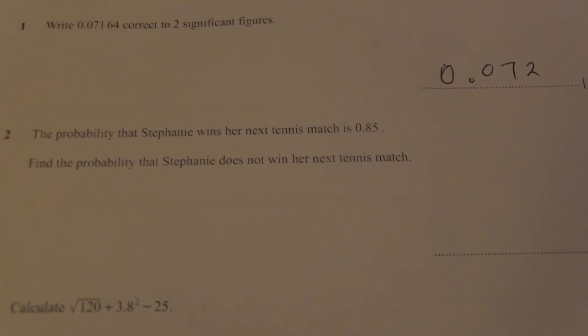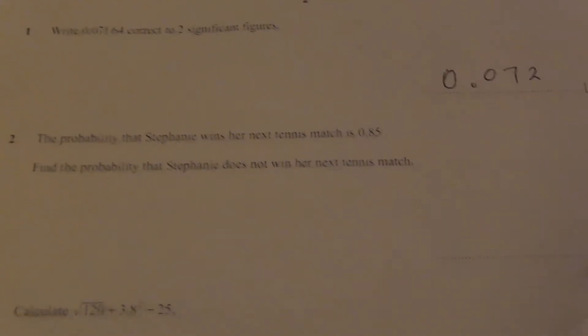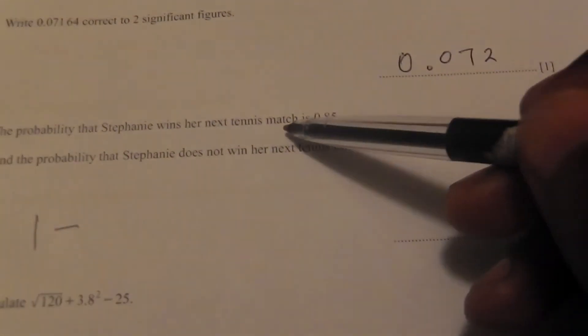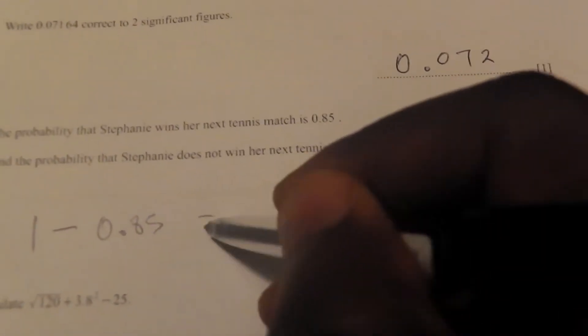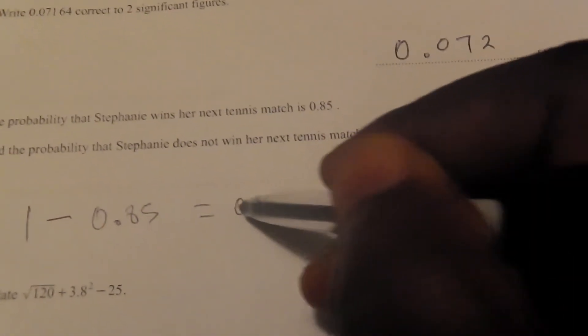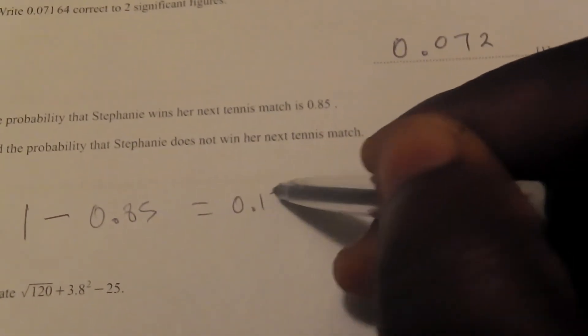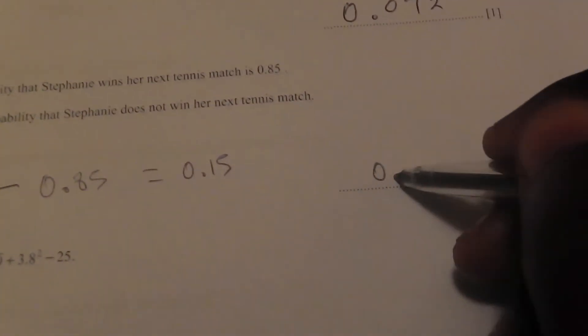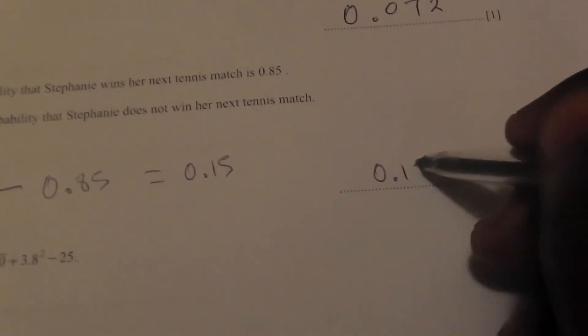The next question asks for the probability that she will not win a match. It will be one minus the probability that she will win, so it will be 1 minus 0.85, which equals 0.15.